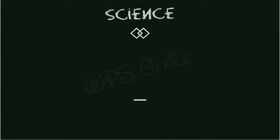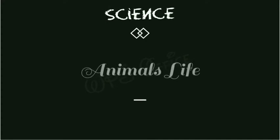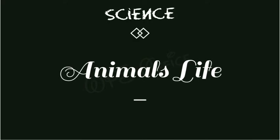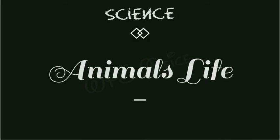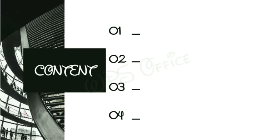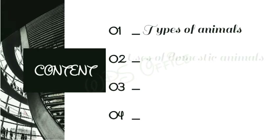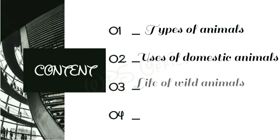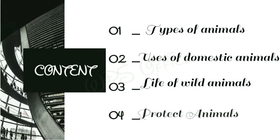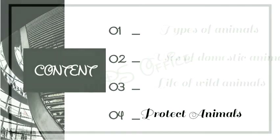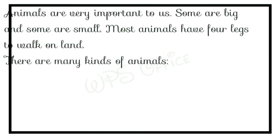Hello students, welcome back to another video from Vidyabharti School. In this video I am going to teach you science on the topic Animal Life. The third chapter of your science of class standard 2 is Animal Life. The main points we will study in this chapter are: types of animals, usage of domestic animals, life of wild animals, and protect animals.